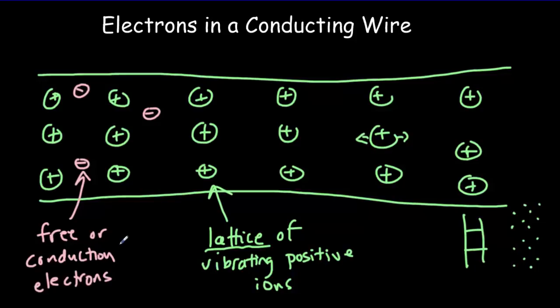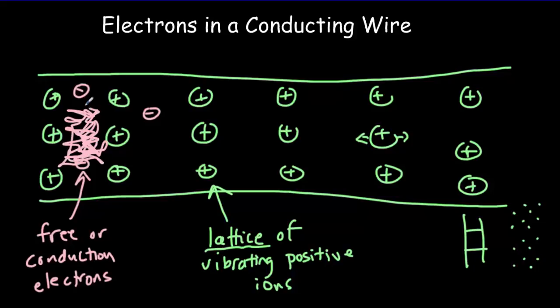These free electrons are subject to all kinds of forces. Naturally, an electron would be attracted to the positive charges, but when it gets very close to an ion, the outer shell electrons will repel it. The ions themselves are also vibrating, so it's a fairly complicated situation. The electrons' motion would just be random — they'd bounce around inside this network of positive ions, and when they get too close to one of the ions, the electrons within the ion repel them away.